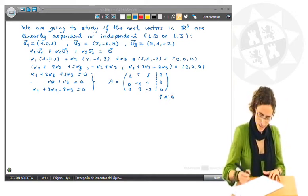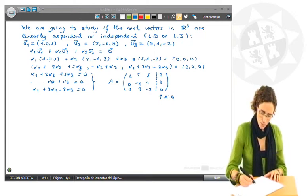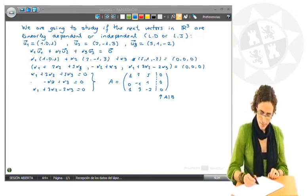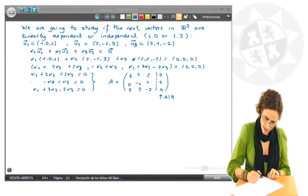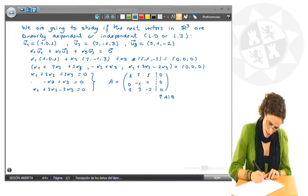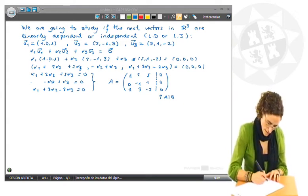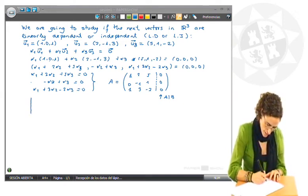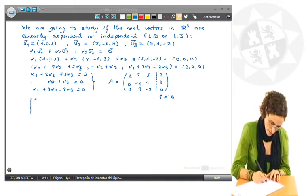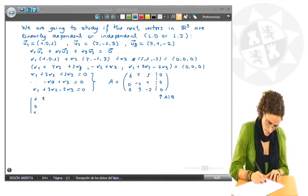To know how many solutions there are, we must compute the rank of the matrix A and the rank of the matrix A bar B. To know the rank of the matrix A, I must calculate its determinant of size 3. So I write down the determinant.